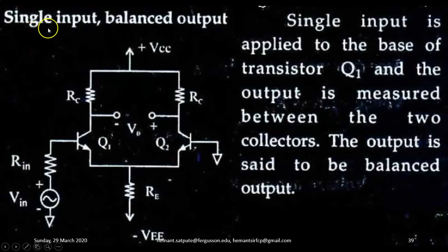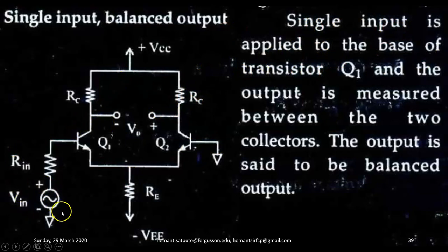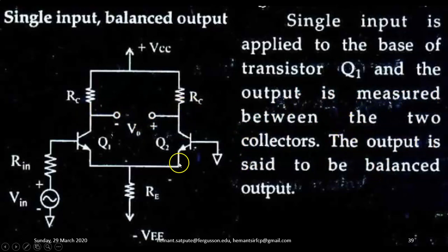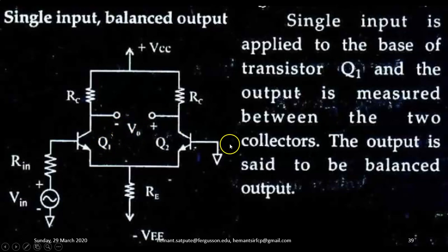Next is single input, balanced output. As the circuit diagram shows, a single input VIN is applied to the base of transistor Q1, and the output is measured between the two collectors. Because the output is measured between two collectors, it is said to be balanced. So this is the single input, balanced output configuration. All components are perfectly matched — both RCs and both transistors.